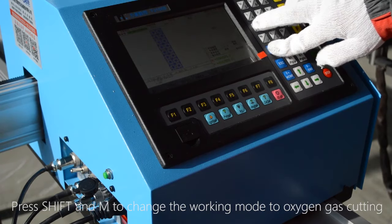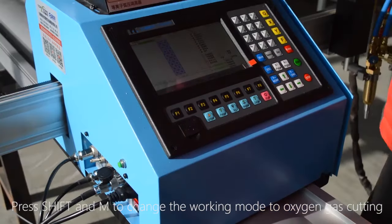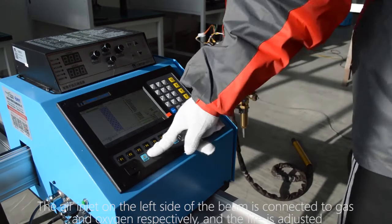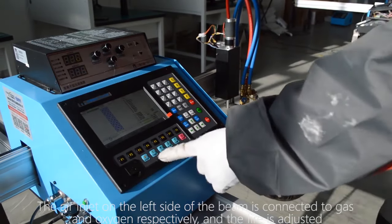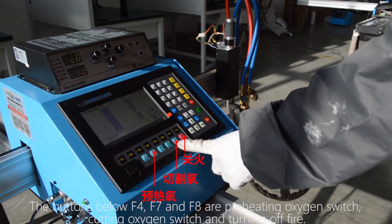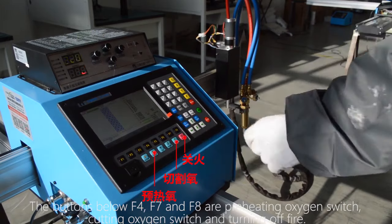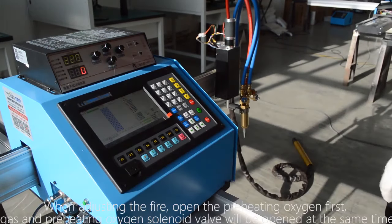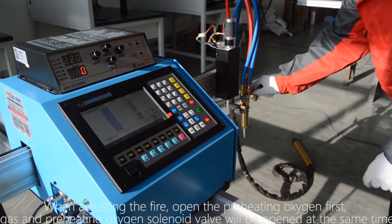Press SHIFT and M to change the working mode to oxygen gas cutting and switch the button on the left side of the machine to flame. The air inlet on the left side of the beam is connected to gas and oxygen respectively and the fire is adjusted. The buttons below F4, F7 and F8 are preheating oxygen switch, cutting oxygen switch and turning off fire.